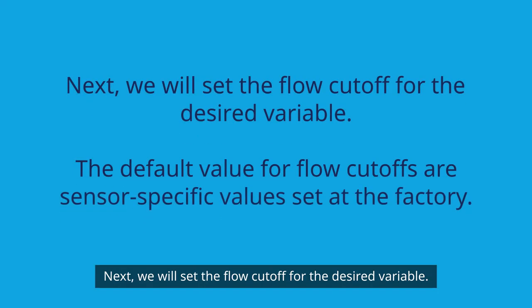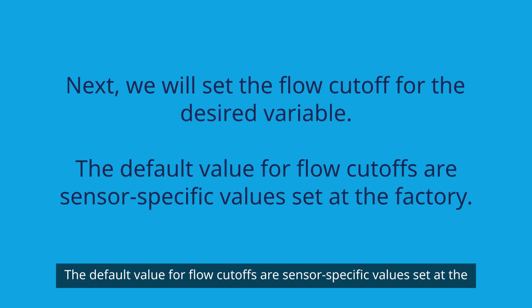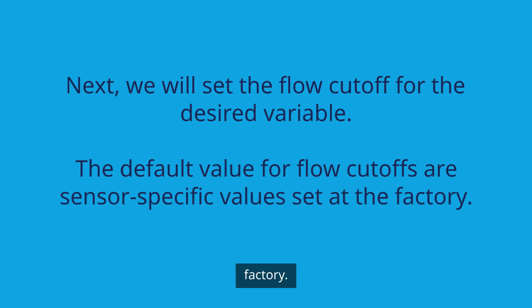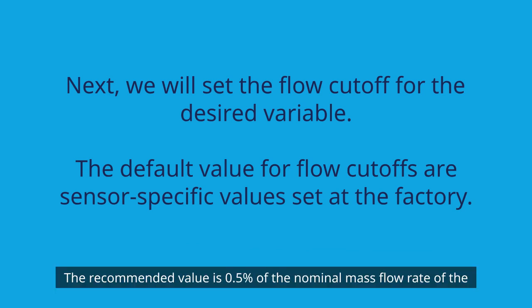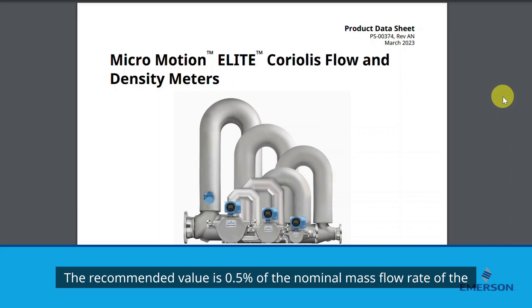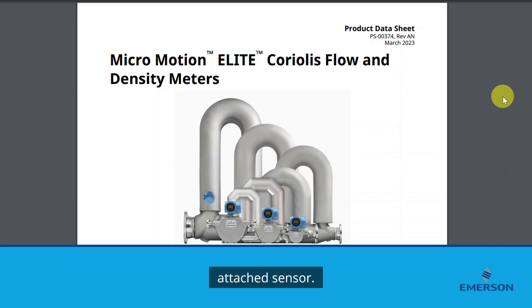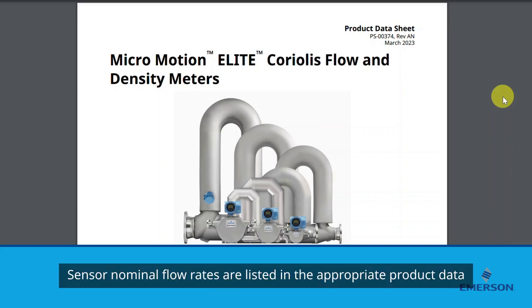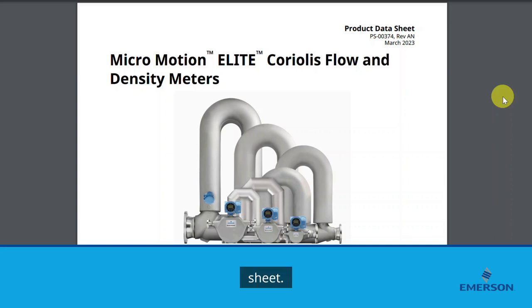Next, we will set the flow cutoff for the desired variable. The default values for flow cutoffs are sensor-specific values set at the factory. The recommended value is 0.5% of the nominal mass flow rate of the attached sensor. Sensor nominal flow rates are listed in the appropriate product data sheet.